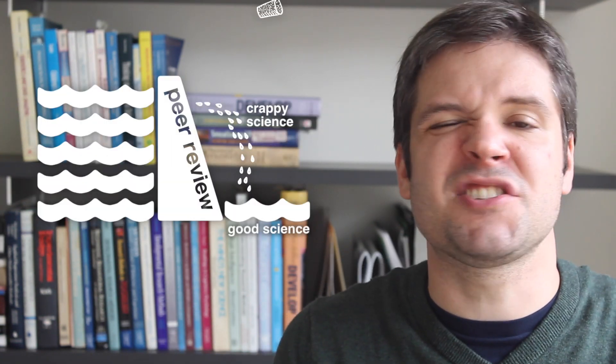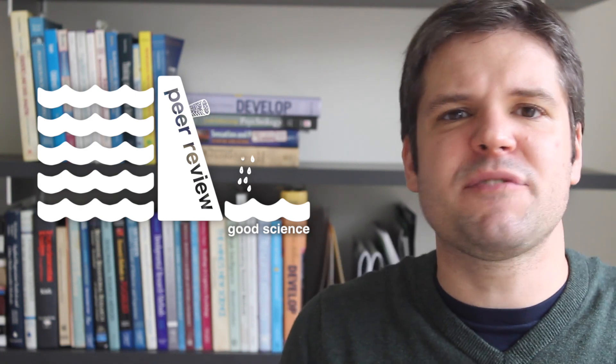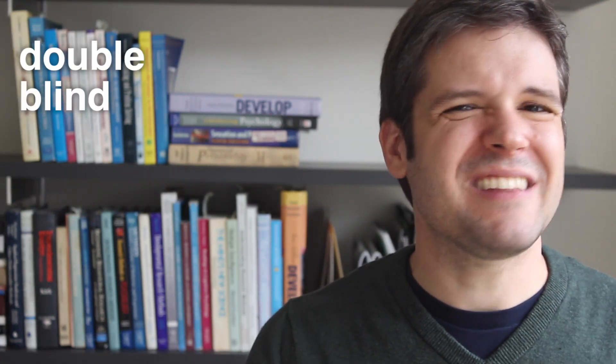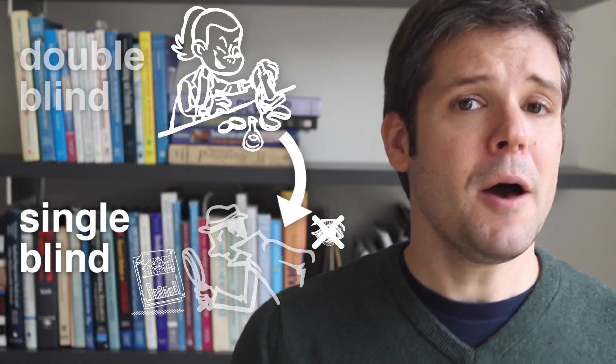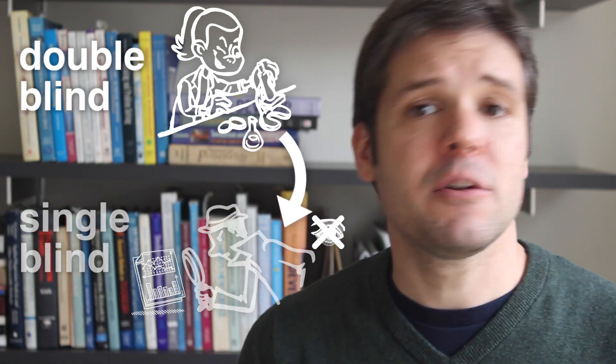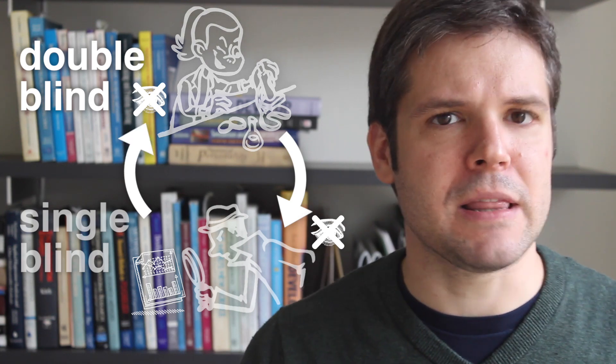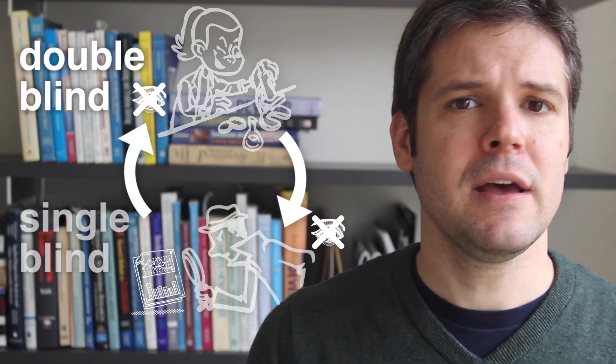Make the peer review process stronger, so fewer of these flimsy studies get through? One possible solution is to make sure all reviews are double-blind. Most journals employ at least single-blind reviews, in which the reviewers are anonymous. But double-blind reviews, in which the reviewers don't know who submitted the paper, are more rare, and occasionally, they're optional. This can increase inequality in professional science.